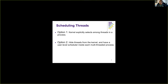Option two is to hide the threads from the kernel and have a user-level thread scheduler inside each multi-threaded process. In this case, with two processes each having two threads, the kernel only sees two processes and schedules between them. A library inside each process takes care of scheduling between the two threads of each process.